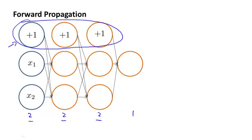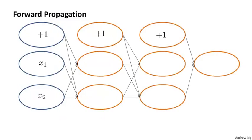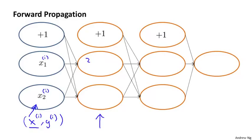In order to illustrate forward propagation, I'm going to draw this network a little bit differently — with the nodes drawn as very fat ellipses so that I can write text in them. When performing forward propagation, we might have some particular example xi, yi, and it would be xi that we feed into the input layer: xi1 and xi2 are the values we set the input layer to. When we forward propagate to the first hidden layer, we compute z21 and z22 — the weighted sum of inputs — and then apply the sigmoid activation function.